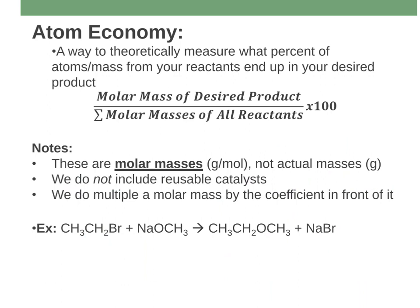There is an equation here. Atom economy is calculated by taking the molar mass — grams per mole, just adding up the atomic masses from the periodic table — of your desired product, and dividing it by the sum of all of the molar masses for all of the reactants. Then you multiply by 100 to get a percent. It's just a fraction: the part over the whole, the part being your desired product and the whole being all of the reactants you put into the reaction.